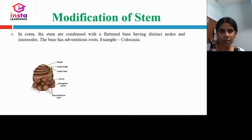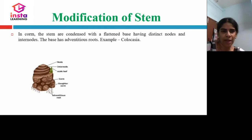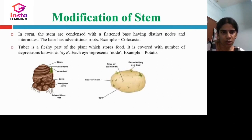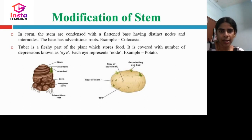Next is the corm, which can be seen in Colocasia. The stems are reduced and condensed with a flattened base having nodes and internodes, with adventitious roots at the base. A tuber, like a potato, is a fleshy part of the plant that stores food. It is covered with a number of depressions known as eyes, and each eye represents a node.